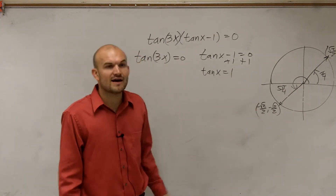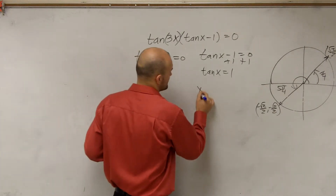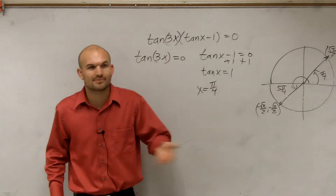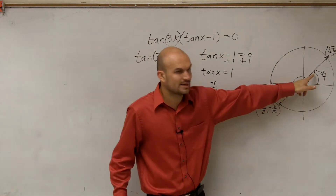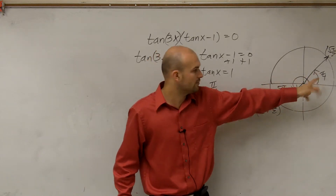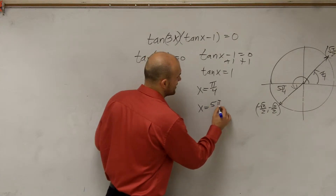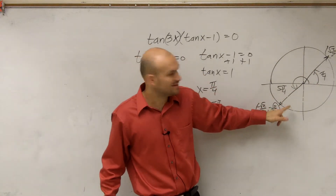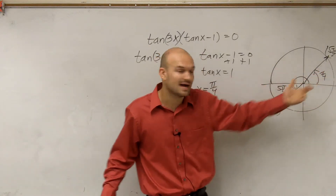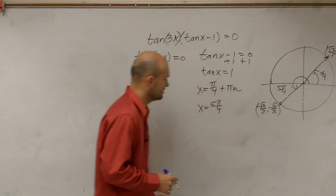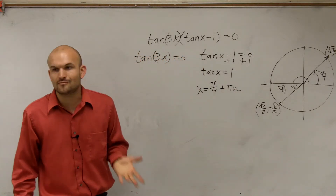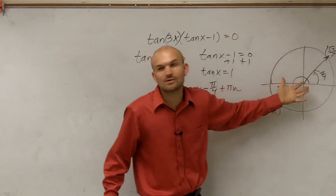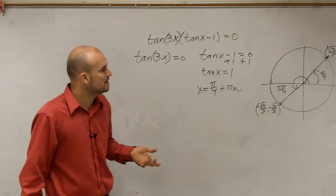So in this example, we have pi over 4 and 5 pi over 4. Now, here's a little bit different. You could say x equals pi over 4, and we might normally say plus 2 pi n — but that's not always the case. Because look: if I start at pi over 4, what do I need to add to get to 5 pi over 4? Pi. And then from 5 pi over 4 back to pi over 4, I just need to add pi again. So in this case I can just write x equals pi over 4 plus pi·n, and I don't need to separately write 5 pi over 4, because it's already included in that answer.